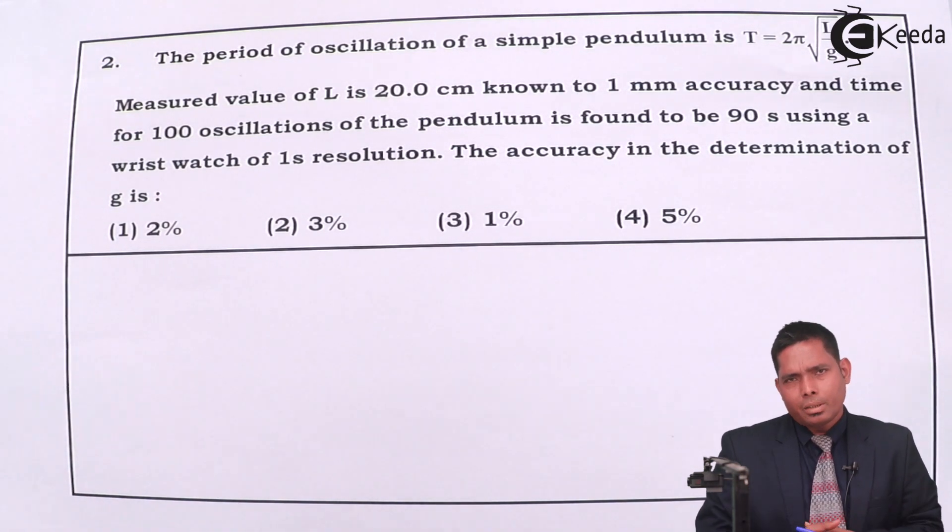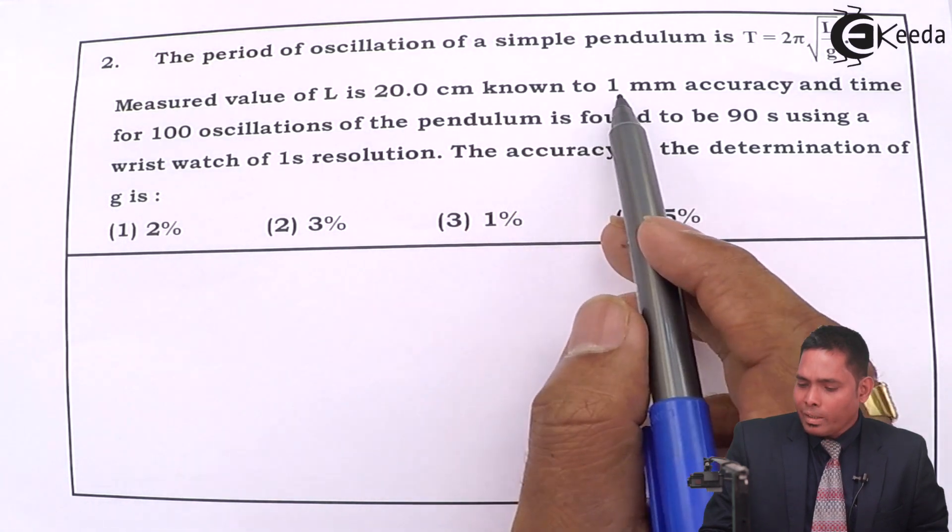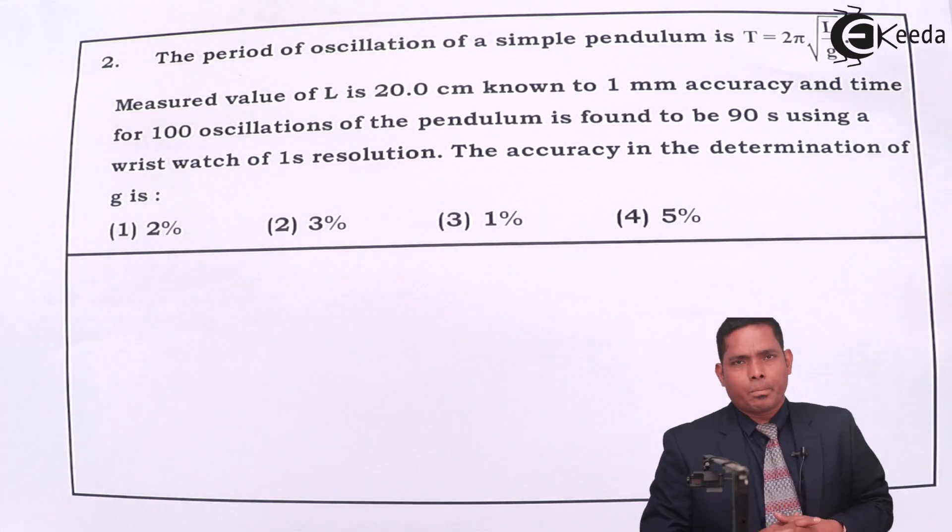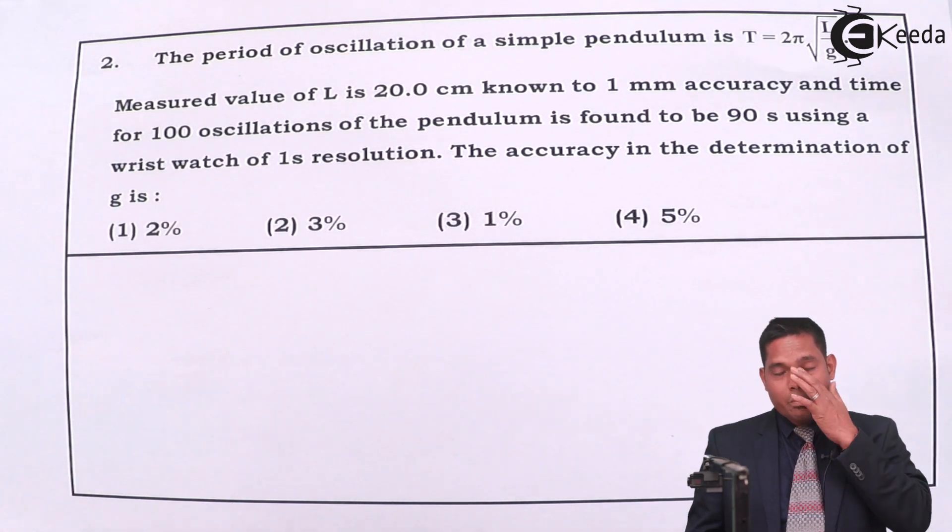It is a measurable value so there must be some error. It's known to one millimeter accuracy, that means the error is one millimeter. The possibility of error is one millimeter, so the least you can measure is one millimeter. That type of scale or instrument is used, so this is the least count.